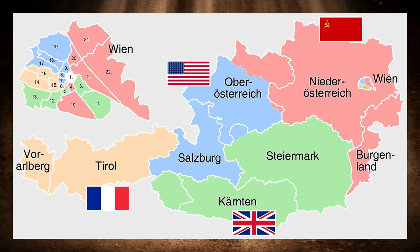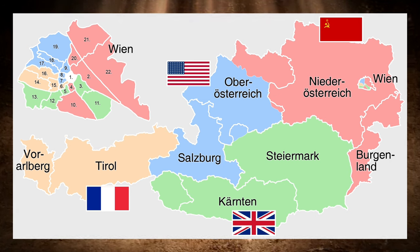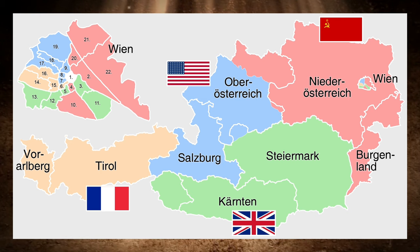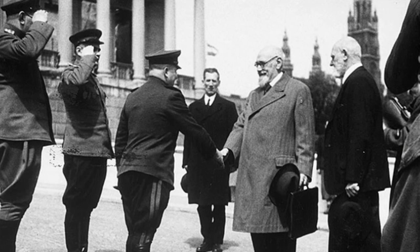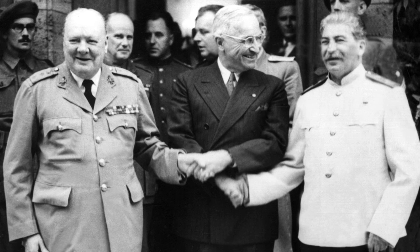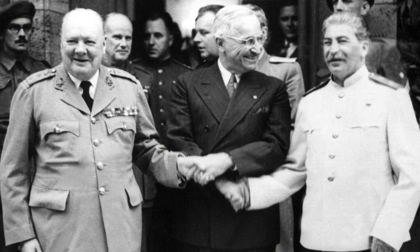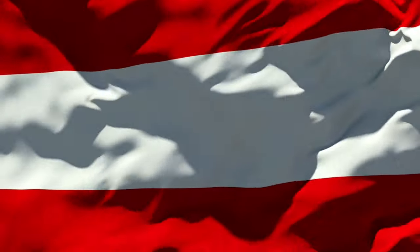The eastern federal states went to the Soviet Union, the southern ones to the British, the western ones to the French, and the rest to the Americans. Like Berlin, the capital Vienna was also divided into four zones, and only the first district was jointly administered by all of them. However, the Austrian government was very keen from the outset to abolish the occupation statute as quickly as possible. Negotiations on the restoration of full sovereignty began as early as 1947, but the Austrians initially had no say in the matter. Even though the Austrian population expected a rapid breakthrough, the negotiations dragged on due to differences of opinion between the Allies.